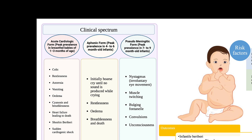The most common pediatric presentation is the aphonic form, where the child has a hoarse cry with breath-holding and no sound produced. Other signs include restlessness, excessive weeping, edema, and breathlessness. Cardiac events include acute colic, anorexia, vomiting, edema, cyanosis, breathlessness, and potentially fatal heart failure. The pseudomeningitic form presents with meningitis-like symptoms: nystagmus, twitching, bulging fontanels, and convulsions.